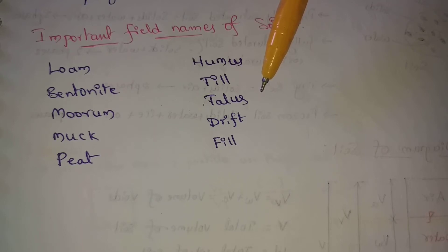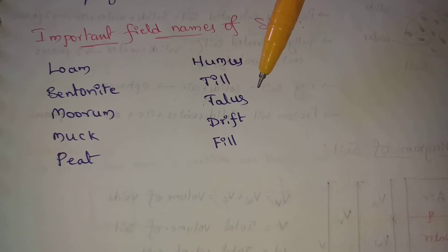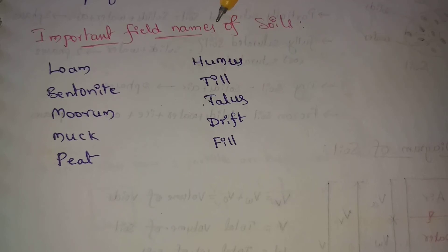Next one, talus. Talus is a colluvial deposit of broken rock pieces at the foot of cliffs or steep slopes, such as mountains with different rock pieces.